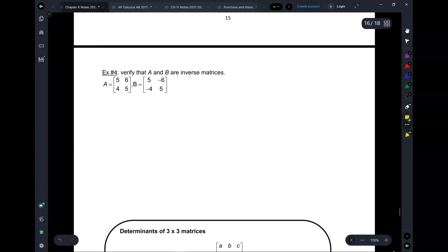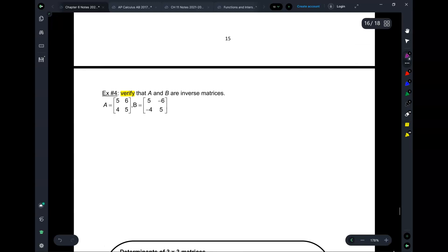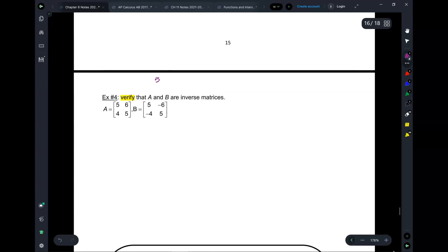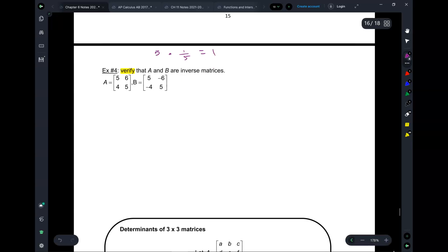So let's do an example. It says to verify that A and B are inverse matrices. So if I were to tell you verify that 5 and 1 over 5 are inverses, what would you do? You would multiply them, you get a 1, and you go aha, see, that's the inverse. So we're going to do the same thing. First, we're going to do A times B.